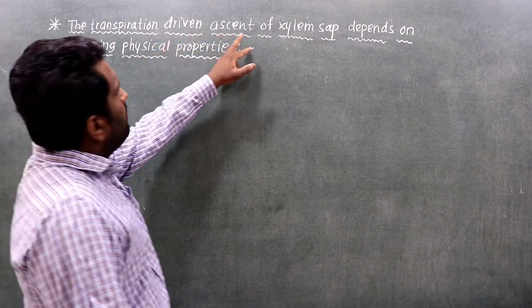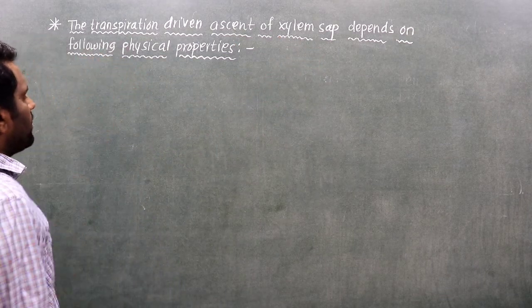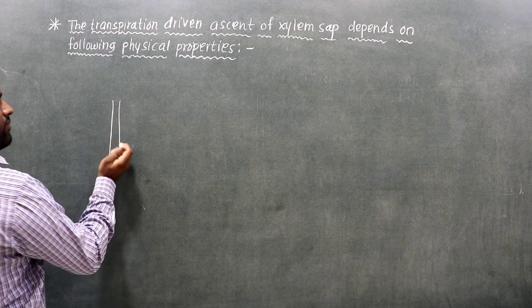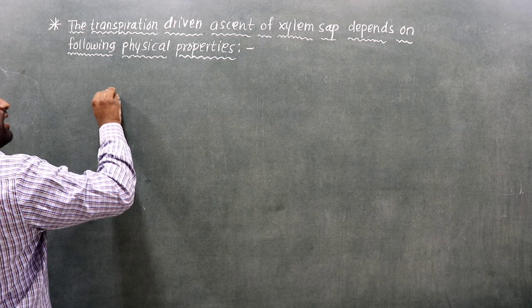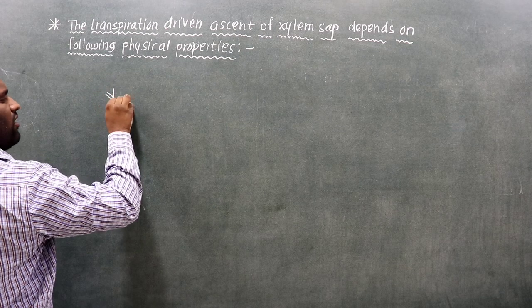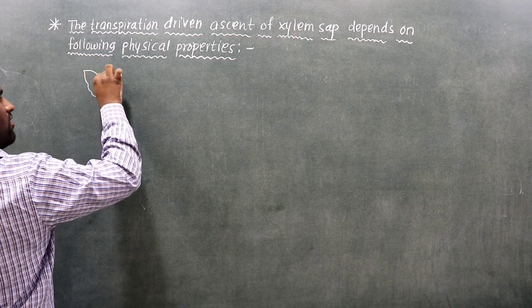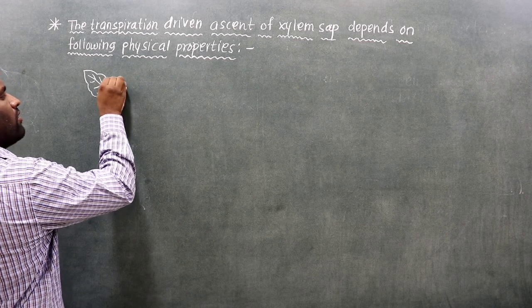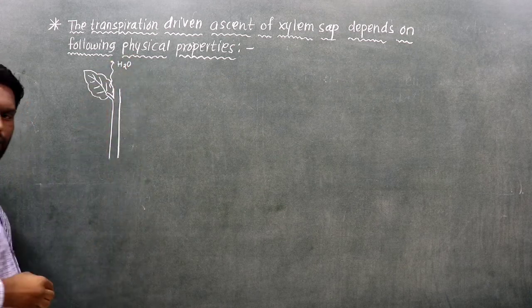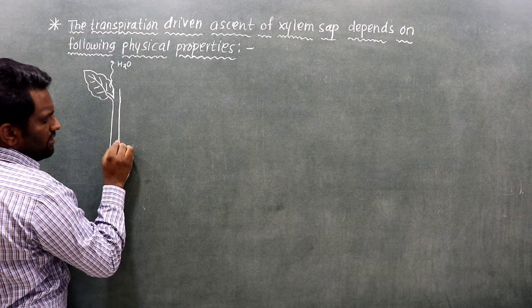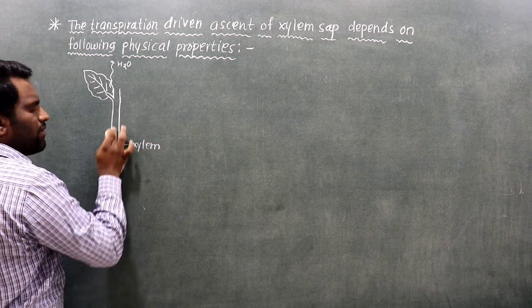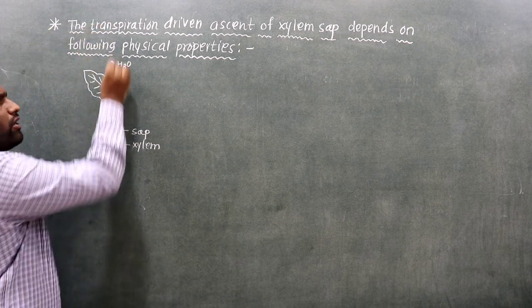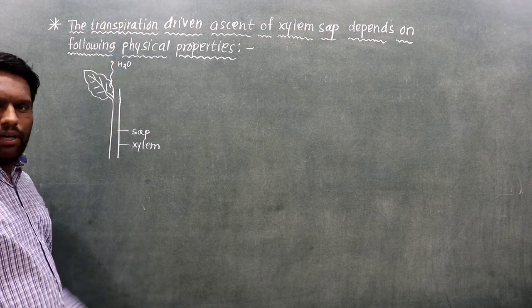Next point: the transpiration-driven ascent of sap depends on the following physical properties. In a plant, water is lost as H2O molecules in vapor form through the leaf — that is called transpiration. This loss drives the ascent of sap upward through the plant.